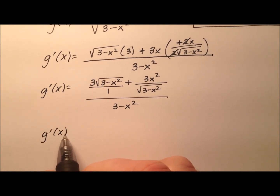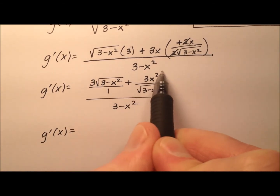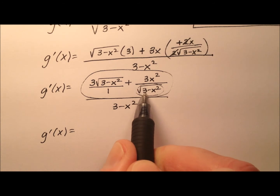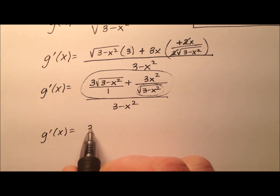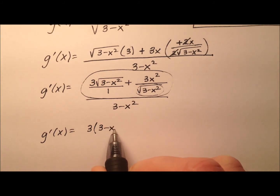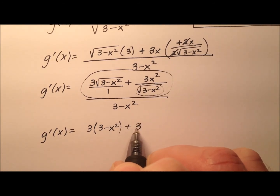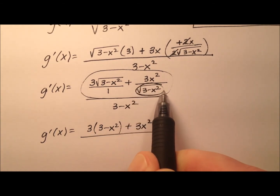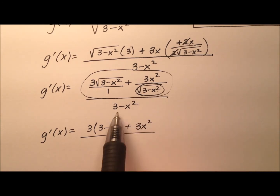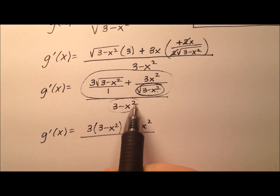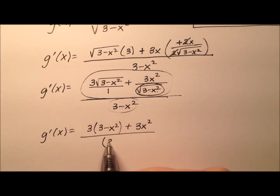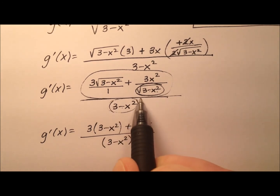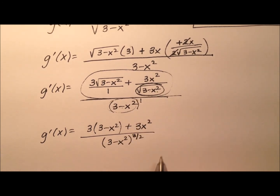Let's go ahead and get common denominators in that numerator. The common denominator is just going to be the square root of 3 minus x squared, which is also present in the numerator — so multiplying through gives us 3 minus x squared plus 3x squared, all over the square root of 3 minus x squared. Combined with the larger denominator, that gives us 3 minus x squared to the power of 1 plus one half, which makes 3 halves.